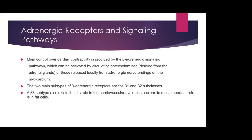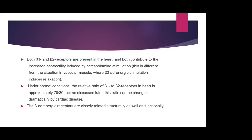Main control over cardiac contractility is provided by the beta adrenergic signaling pathway, which can be activated by circulating catecholamines derived from adrenal glands like adrenaline and noradrenaline, or those released locally from adrenergic nerve endings on the myocardium. The two main subtypes of beta receptors are beta-1 and beta-2. Beta-3 also exists but its main role is in lipolysis. Both beta-1 and beta-2 are present in the heart and contribute to increased contractility induced by catecholamine stimulation. In vascular muscle, beta-2 adrenergic stimulation causes relaxation. Under normal conditions, the ratio of beta-1 to beta-2 receptors in the heart is approximately 70:30, but this changes during cardiac disease.